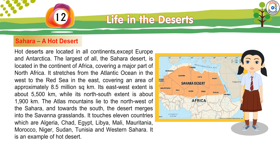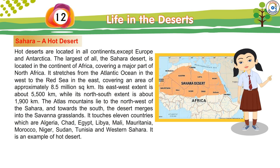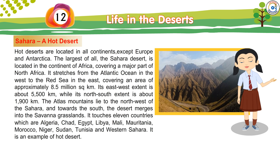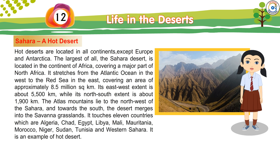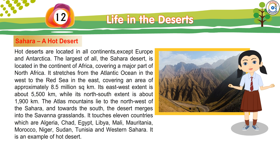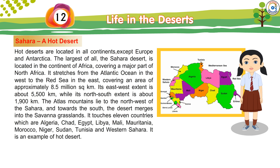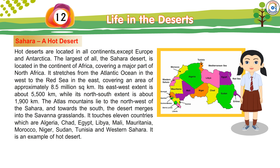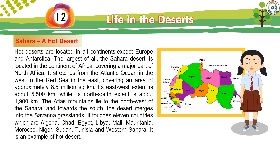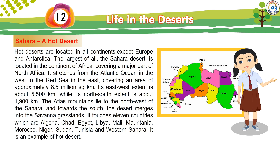Its east-west extent is about 5,500 kilometres, while its north-south extent is about 1,900 kilometres. The Atlas Mountains lie to the north-west of the Sahara, and towards the south the desert merges into the savannah grasslands. It touches 11 countries: Algeria, Chad, Egypt, Libya, Mali, Mauritania, Morocco, Niger, Sudan, Tunisia, and Western Sahara. It is an example of a hot desert.